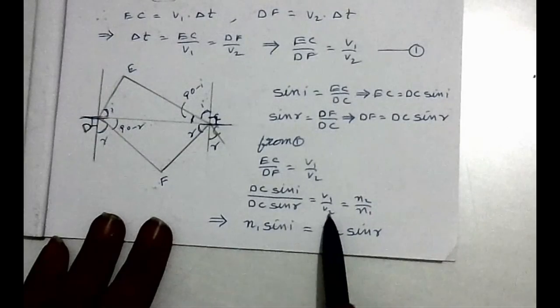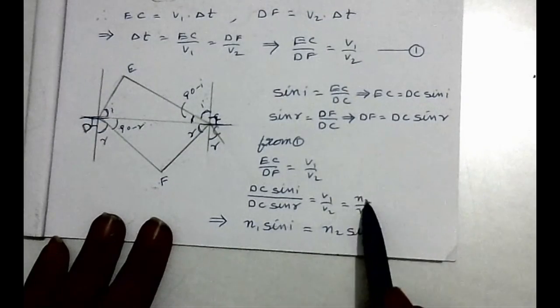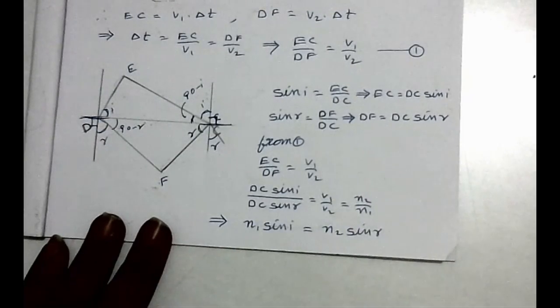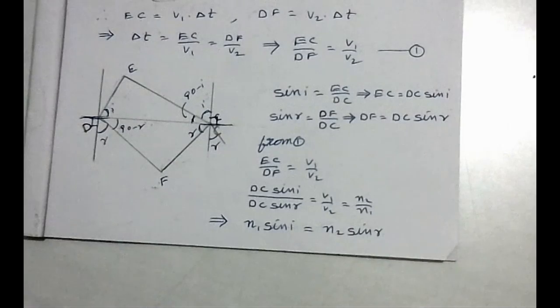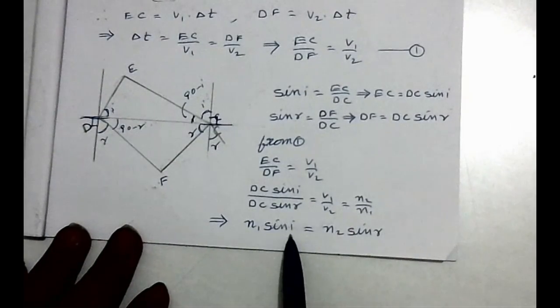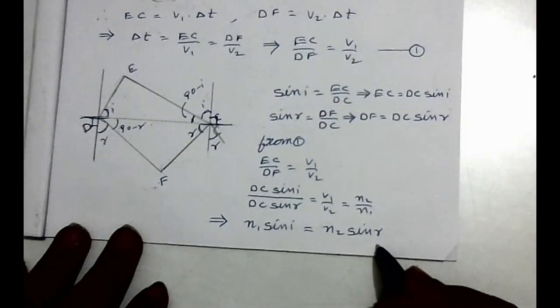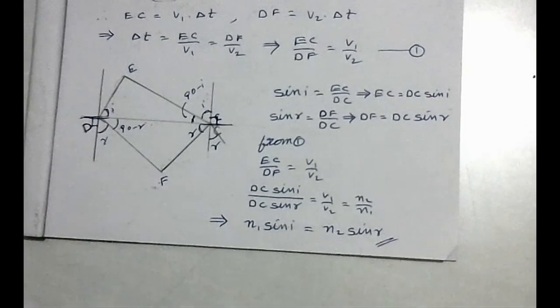From equation number one, EC divided by DF equals v1 divided by v2. Substituting EC equals DC sine i and DF equals DC sine r, we get sine i divided by sine r equals v1 divided by v2. Since v1 divided by v2 equals n2 divided by n1, this implies n1 sine i equals n2 sine r. That is Snell's Law.